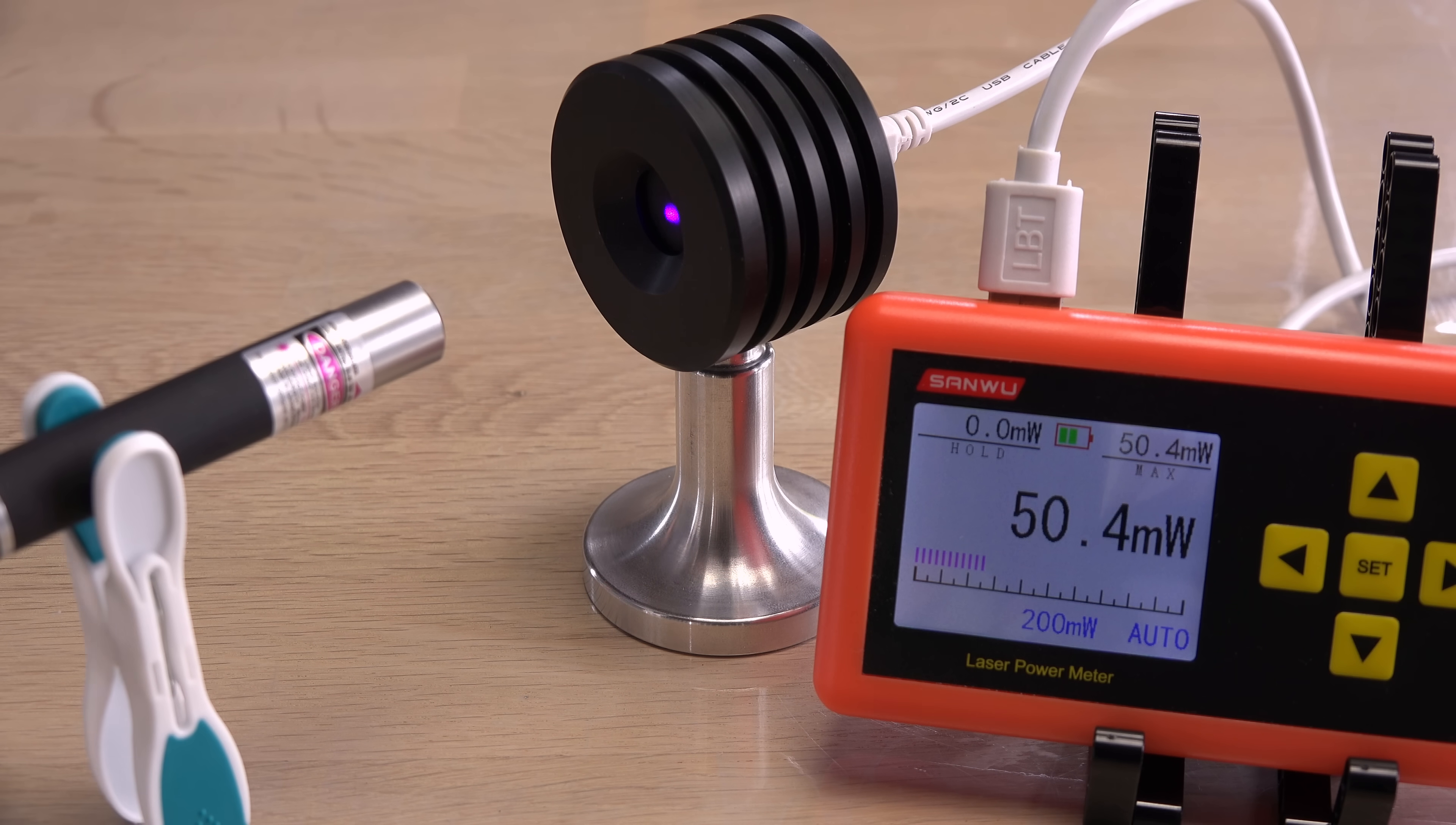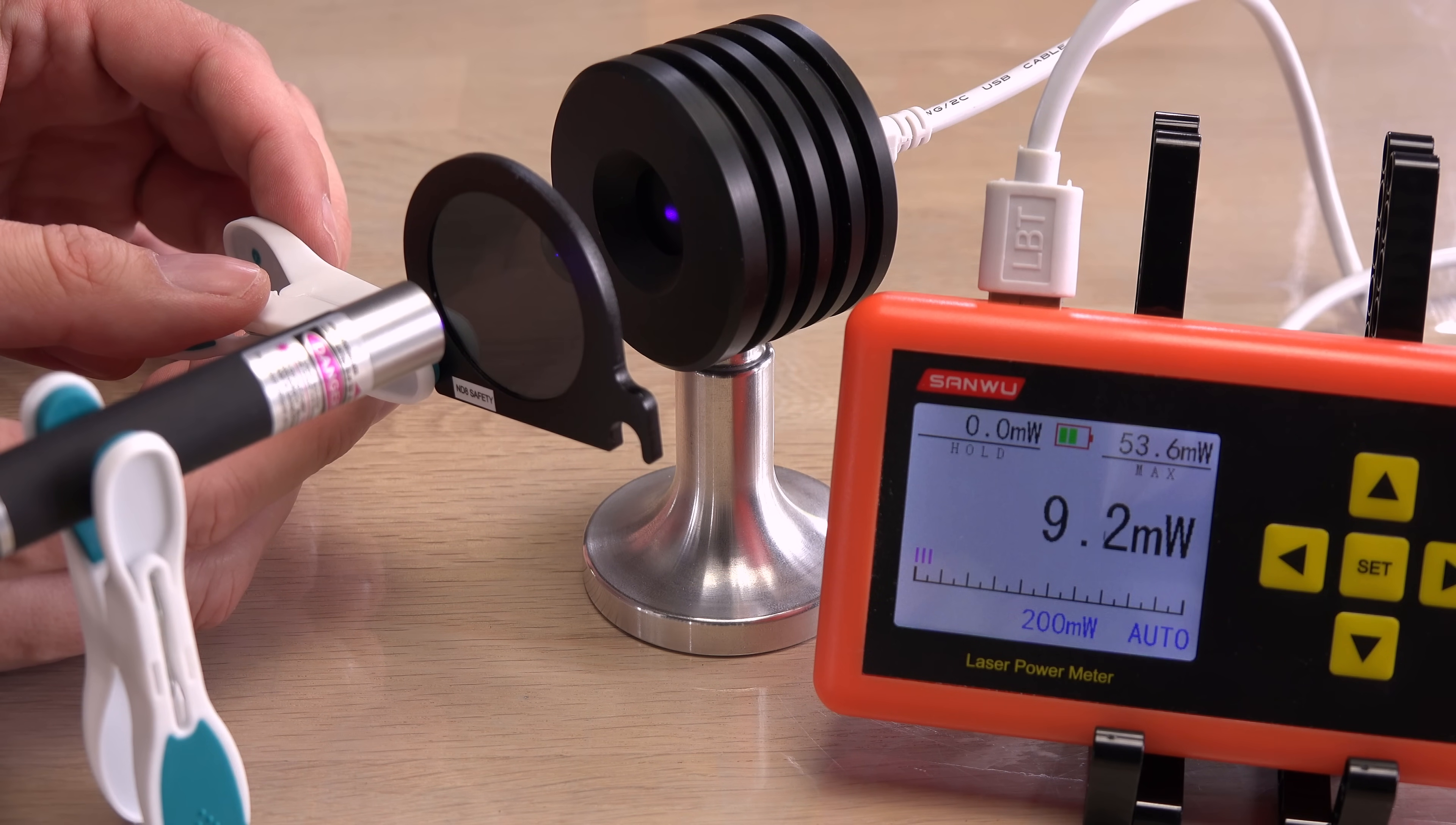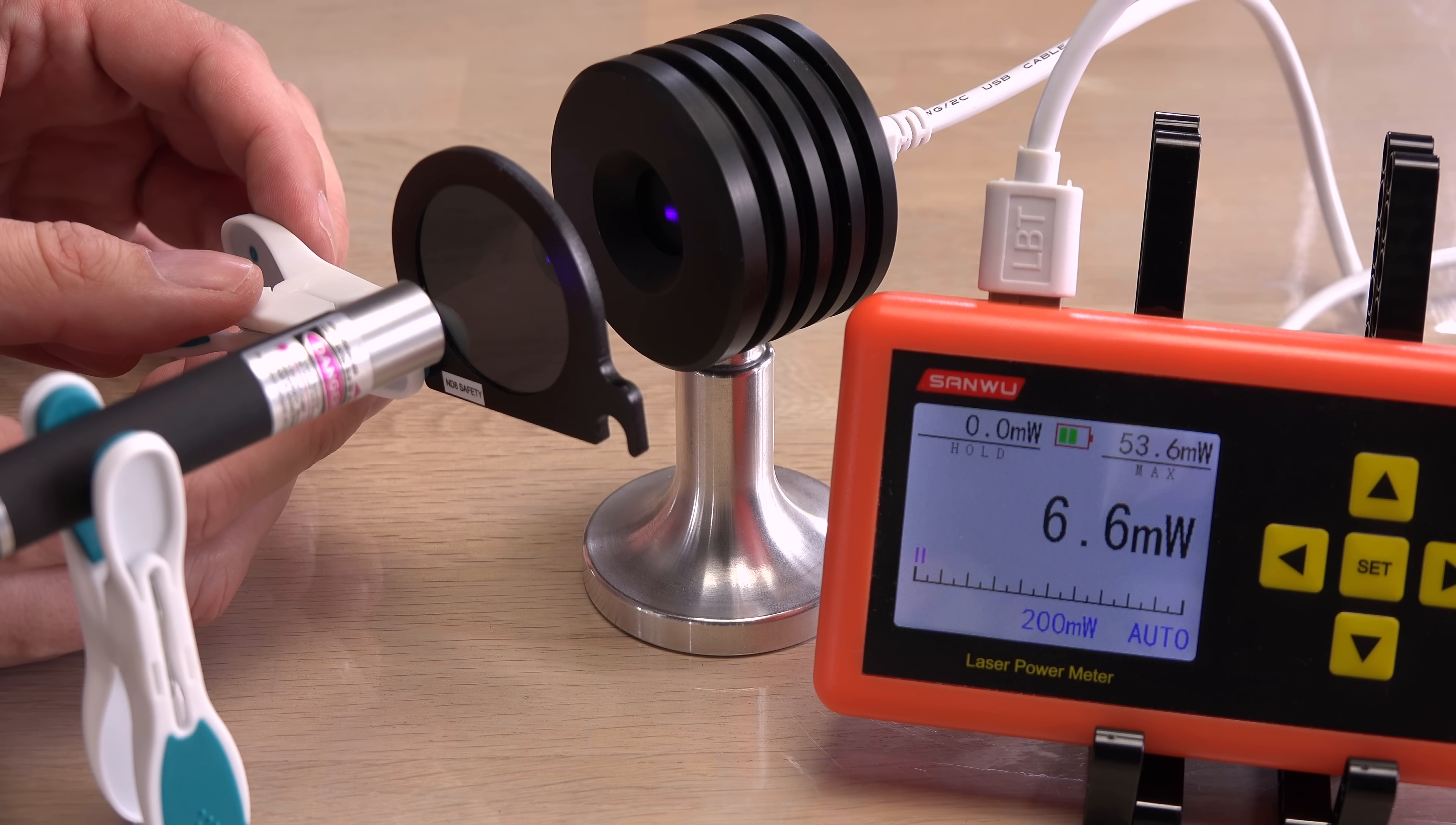The ND filter lowers the power 8 times to around 6.5 milliwatts. Looks like it changed the laser beam's color, but that's just a camera being confused on how to record this almost ultraviolet color like a human would see it. It is still a deep violet color in real life.